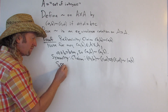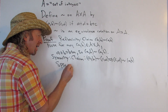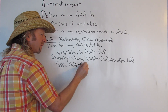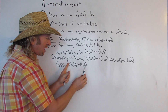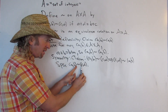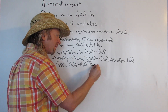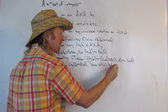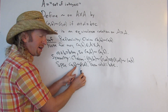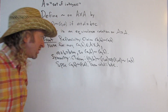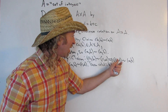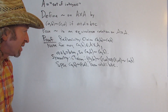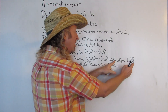Suppose AB is related to CD. This means that the sum of the outers is equal to the sum of the inners, so A plus D is equal to B plus C. We need to show that the outers equals the inners for CD related to AB, meaning C plus B is equal to D plus A.